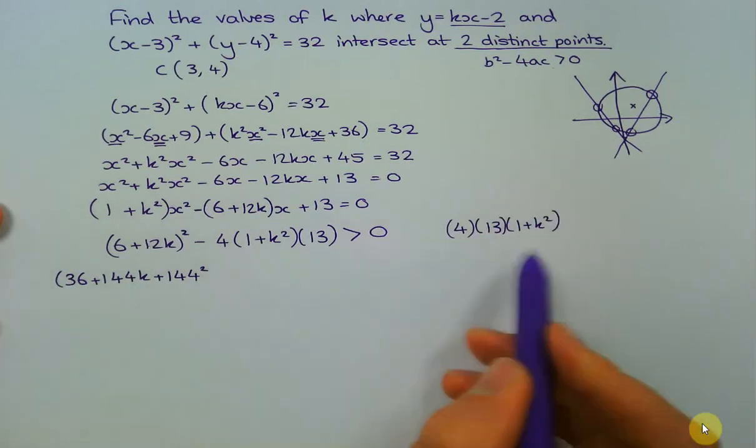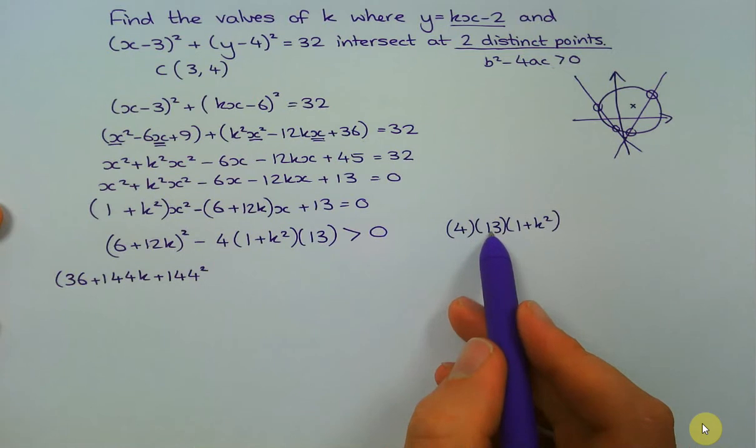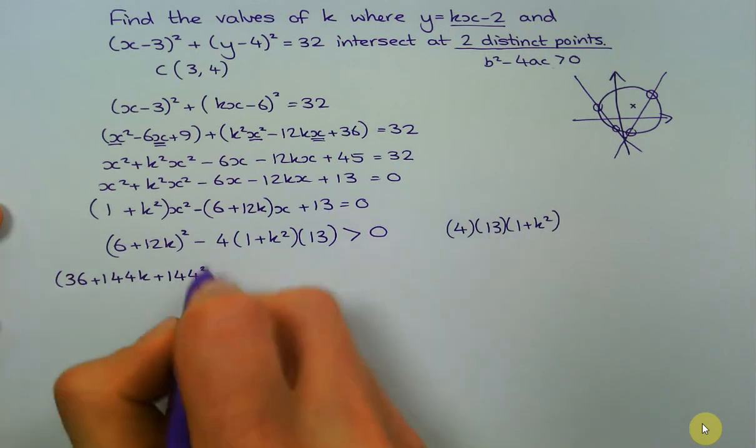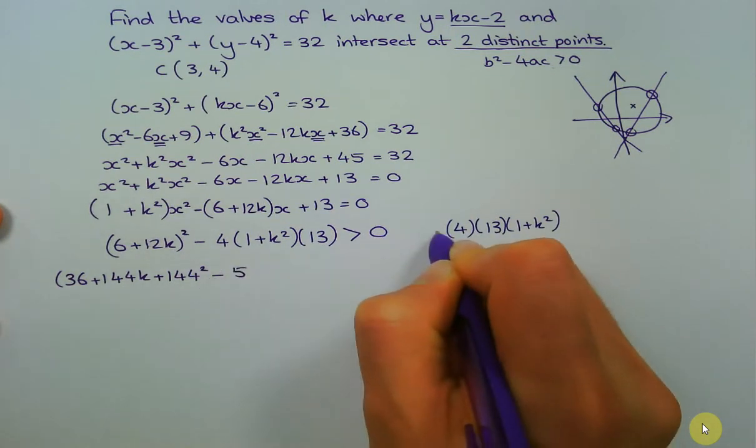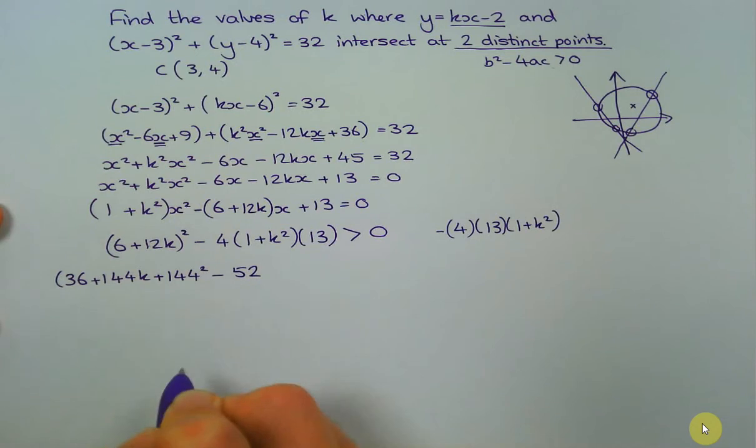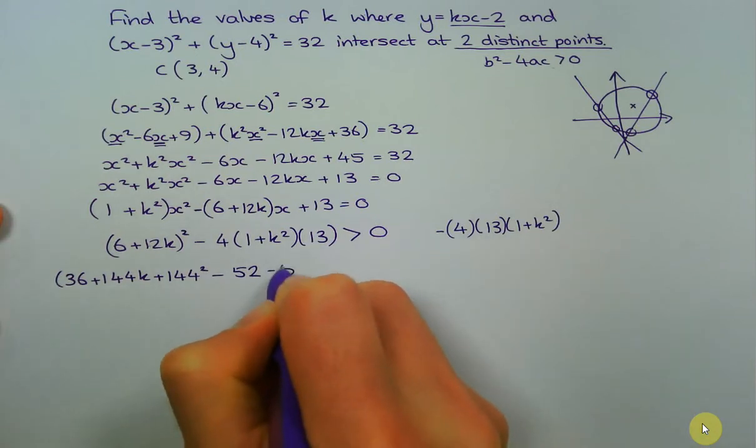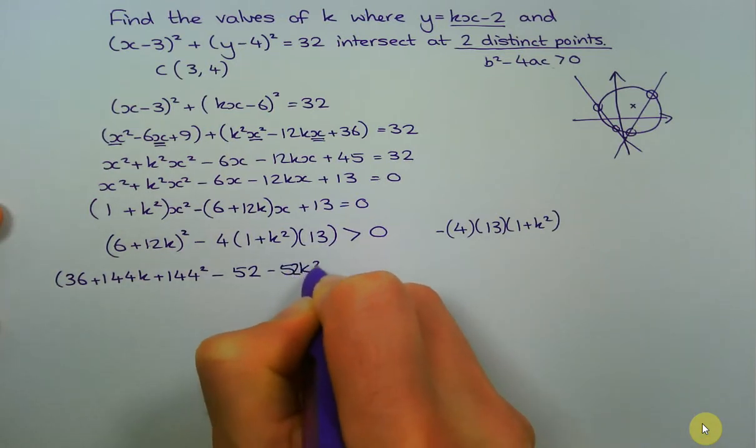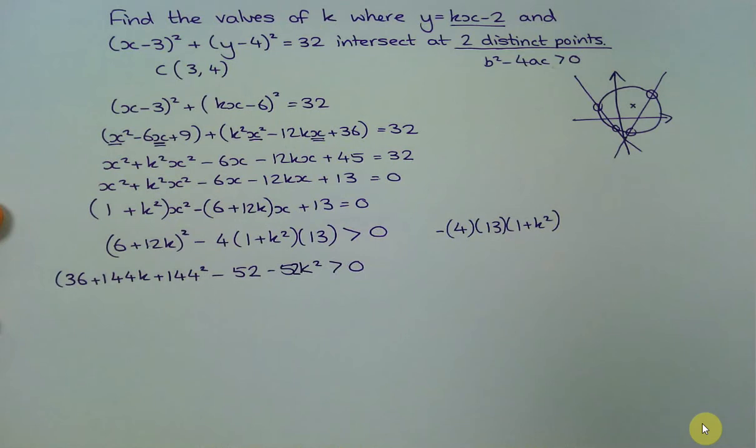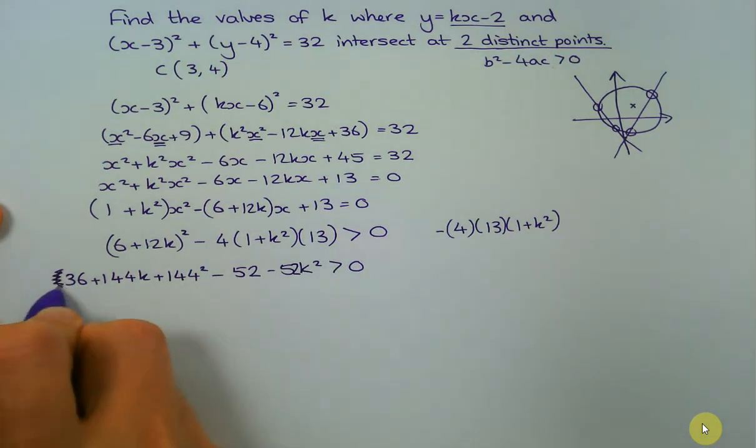Because it's multiplication, you can do it in any order. So what's that? That's 52. So I'm going to have -52 and -52k². Just cross out that bracket, I didn't need it.